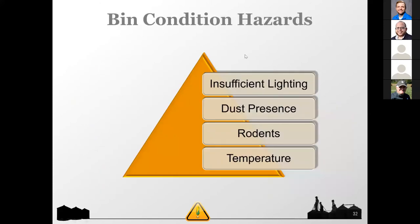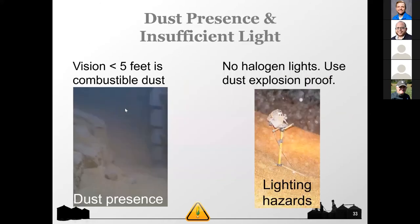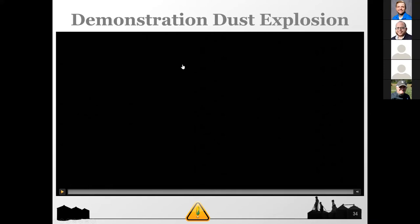Other grain conditions that contribute to hazards include insufficient lighting, dust presence, rodents, and temperature. Dust presence can also be combustible — we see that more in concrete silos. Here's a demo of grain dust to show you how combustible it is.